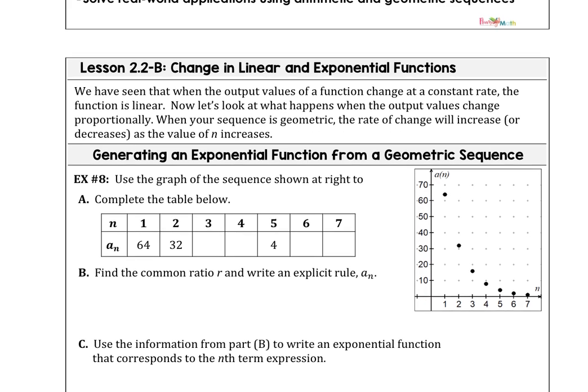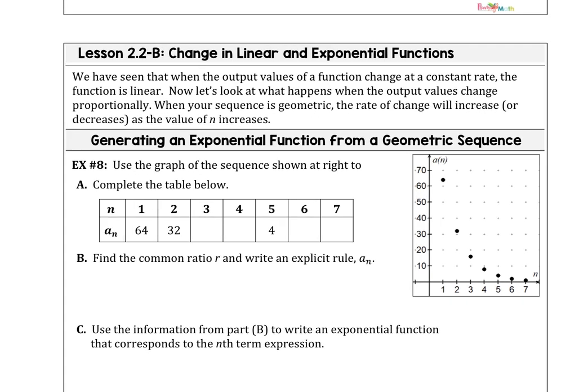We've already seen how the output values of a function change at a constant rate when the function is linear, but now we want to look at what happens when the output values change in a proportional fashion. When your sequence is geometric, the rate of change will increase or decrease as the value of n increases.